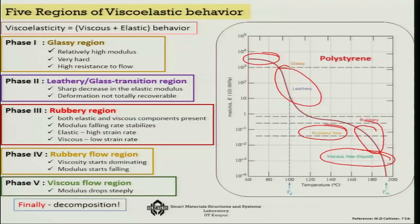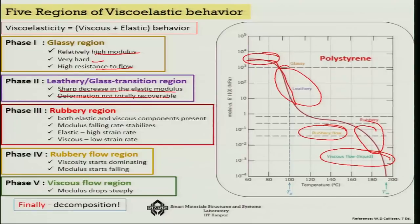In Phase 1, the glassy region, the polymer has relatively high modulus, is very hard, and has high resistance to flow because chains are not mobilized. In Phase 2, the transition region, there is a sharp decrease in elastic modulus and deformation is not totally recoverable. In Phase 3, the rubbery region, both elastic and viscous components are present, with a stabilized modulus fall rate. Phase 4 is the rubbery flow region where viscosity starts to dominate. Phase 5 is the viscous flow region where modulus drops very steeply, followed by decomposition.